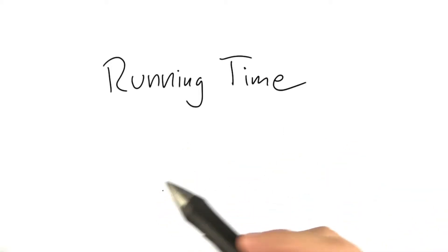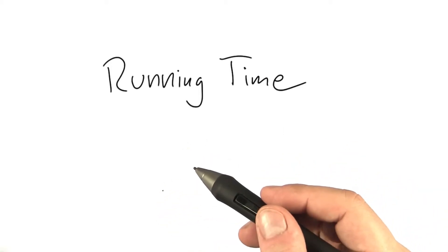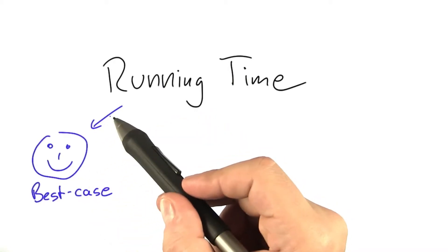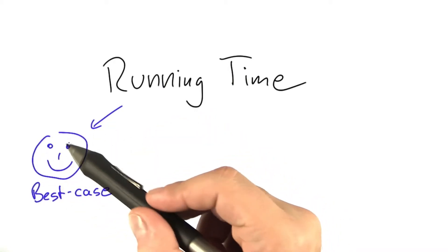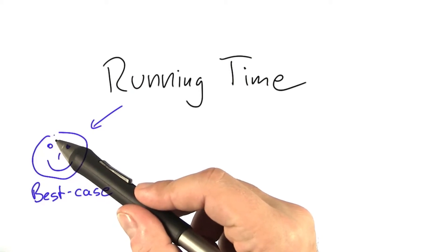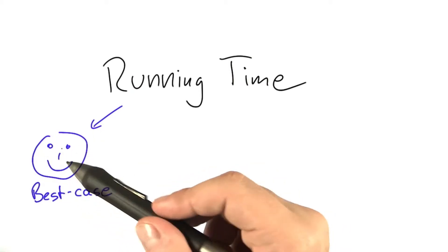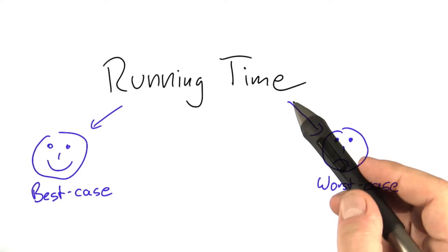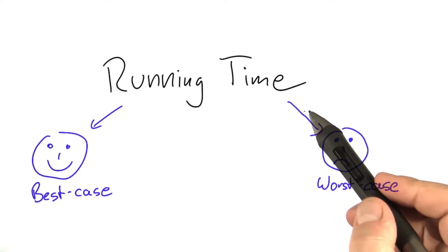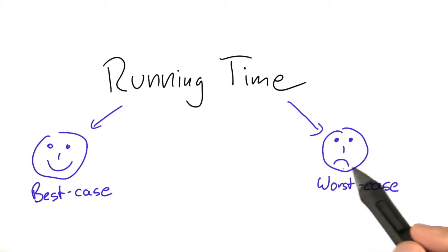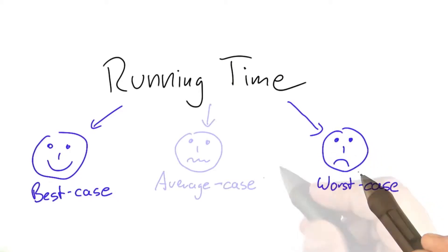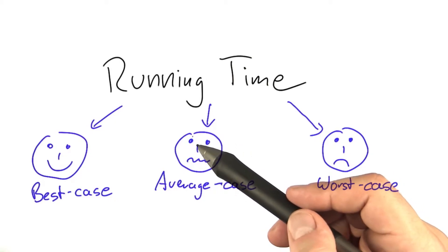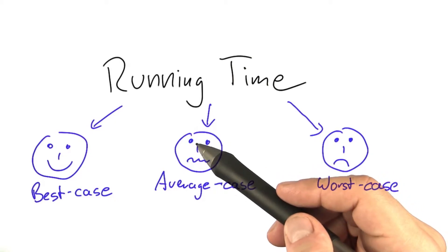As you just saw on the quiz, there are three kinds of view we can take with regards to running time. We can take a best case view and assume that all the inputs we're getting are the ones that make our algorithm run the fastest. Or we can take the very opposite view and say that the running time is determined by the worst possible input. Or we can define running time as the average time our algorithm will take over a number of inputs.